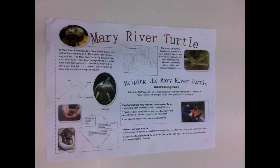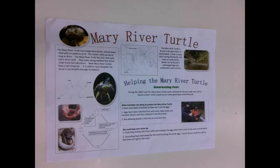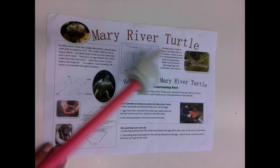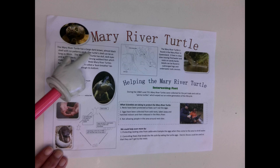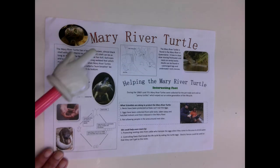Hey guys, Miss Beatross again. Today I'm going through an example of an endangered Australian animal poster. This one is about the Mary River Turtle. As you can see, we've got a nice big title up there in a different font and it stands out — it's actually in red on this poster.